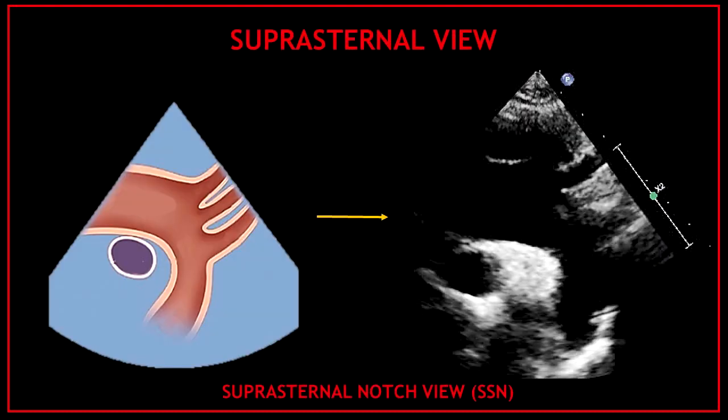This is the suprasternal view, also known as the suprasternal notch view. This is a very important part of the echocardiographic investigation where we can see important segments of the aorta. This won't be a long video as this is a very simple view; however, I'm going to show you one by one all the structures you can visualize in the suprasternal view.